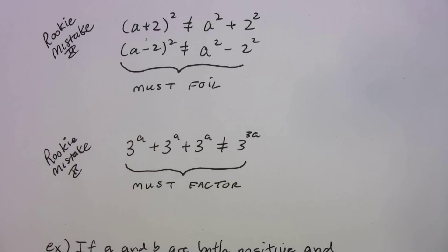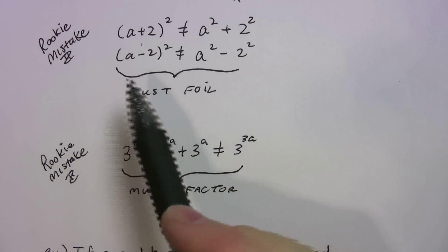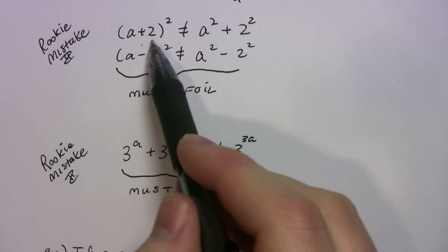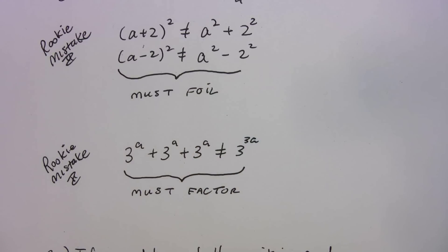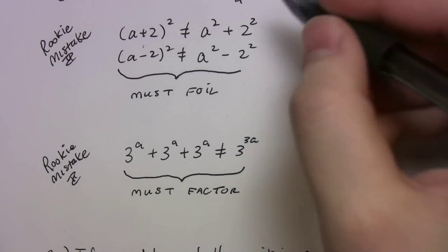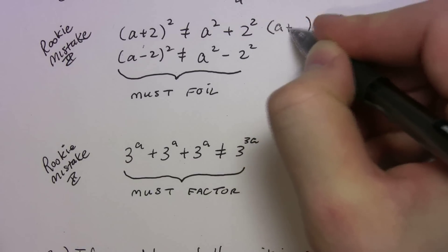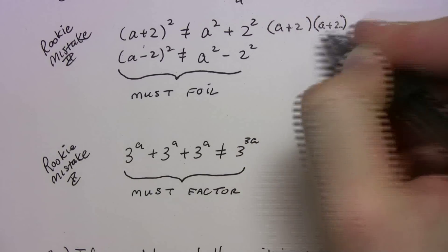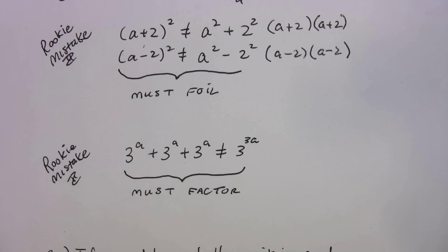Let's talk about some rookie mistakes — things you want to avoid. If you have (a + 2) squared, that does not equal a squared plus two squared. And (a − 2) squared does not equal a squared minus two squared. You have to FOIL in these situations. You do your double bubble: (a + 2)(a + 2) and (a − 2)(a − 2). You have to FOIL.